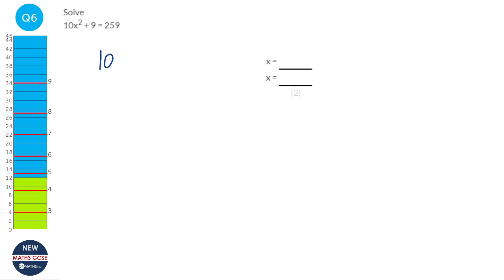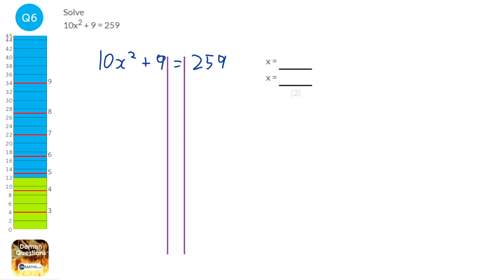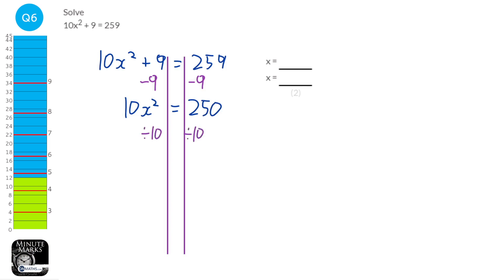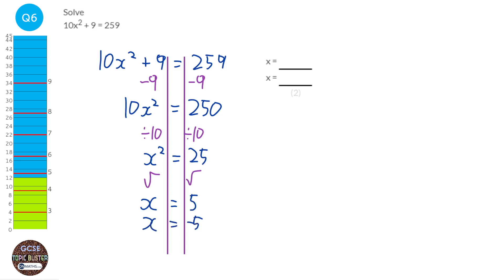I'm going to write this question out a bit bigger so we've got more room. We're asked to solve. We put our solving lines in and start by subtracting 9 from both sides, leaving 10x squared on the left and 250 on the right. Then we divide both sides by 10, giving x squared equals 25. Then we square root both sides. This gives us 5, but also negative 5, because minus 5 times minus 5 is also 25. So our two solutions are 5 and minus 5.